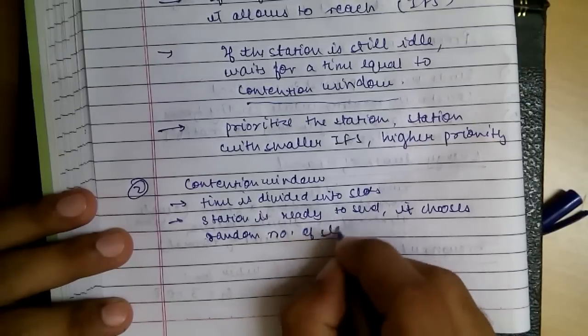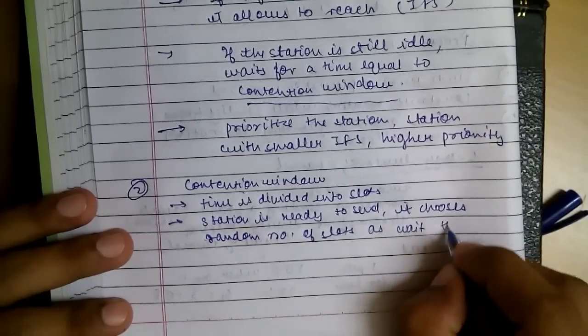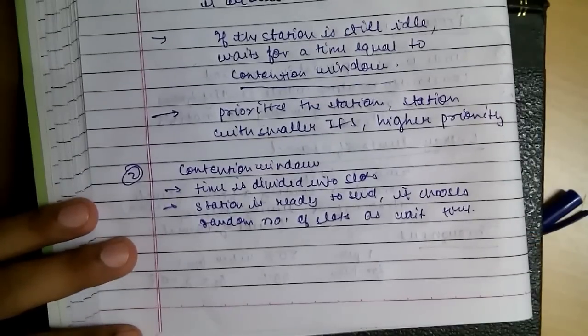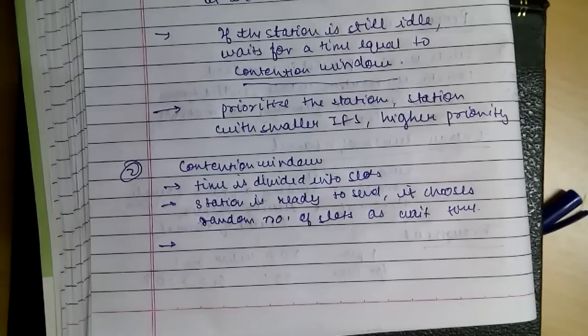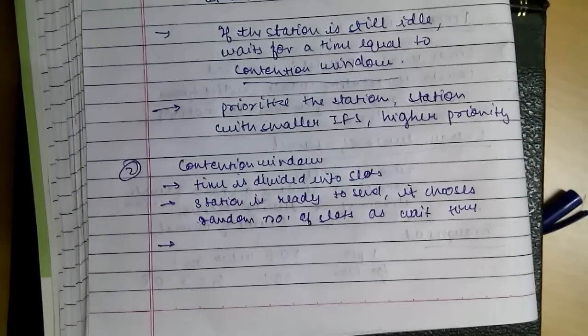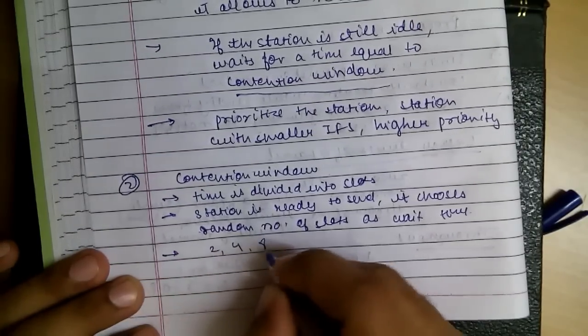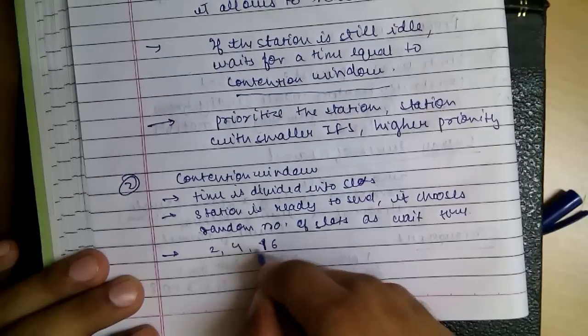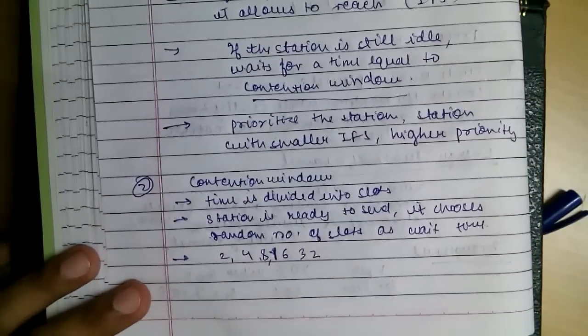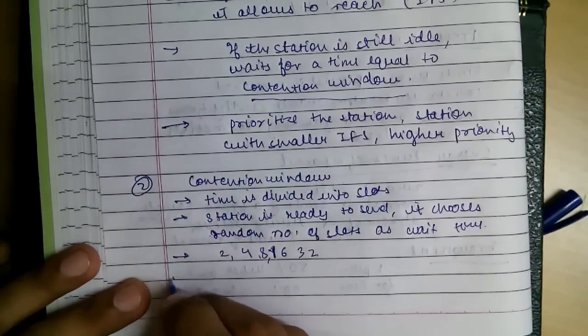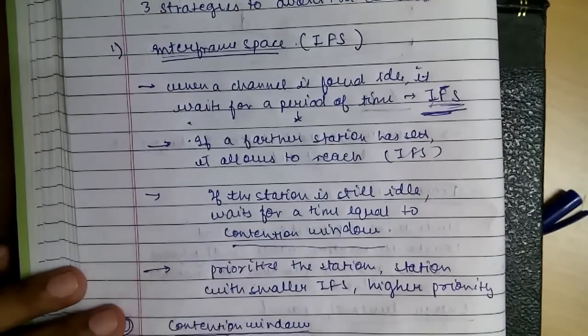A random number of slots as wait time. The numbers of slots are according to that binomial back-off procedure. The number of slots increases like 2, then 4, then 8, 16, 32 in this manner. So this is the second method.